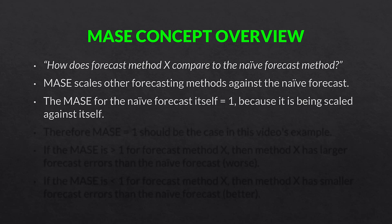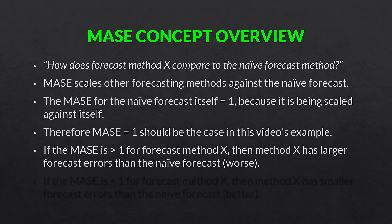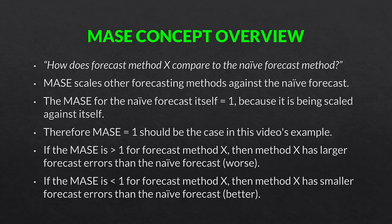The MASE for the naive forecast itself equals one because it is being scaled against itself. So when conducting a naive forecast, the MASE will always be one, assuming you've done it correctly. If the MASE is greater than one for forecast method X, then method X has larger forecast errors than the naive forecast and performs worse. If the MASE is less than one, then method X has smaller forecast errors and performs better.